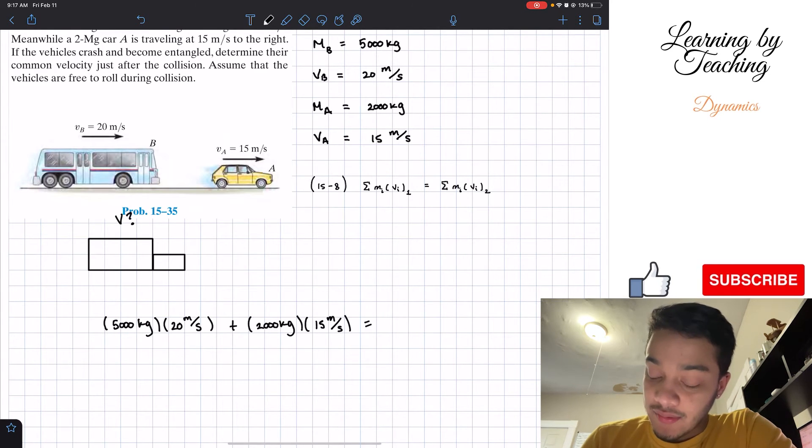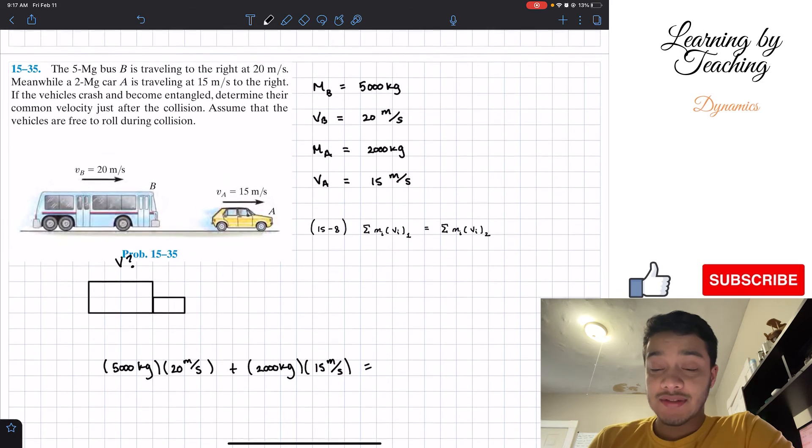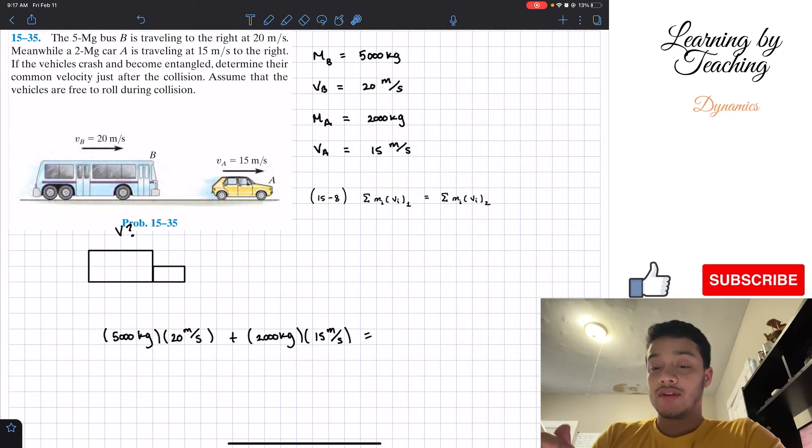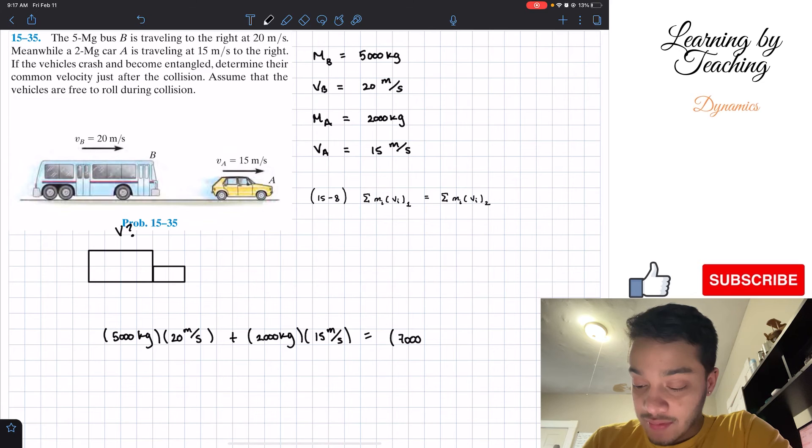And this has to be equal to the mass of our second part that we're interested, which is when they are together. Meaning that the mass of the bus B and the mass of A are now together. Since they are together, we're going to add them up, kind of like being a new vehicle, like a larger vehicle of 7000 kilograms, the addition of both of them, right? The addition of 5000 and 2000.